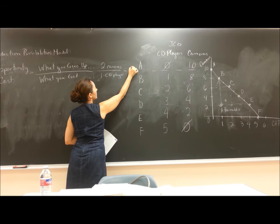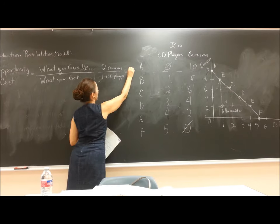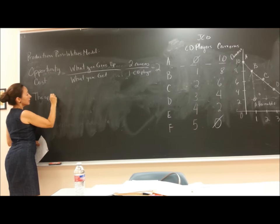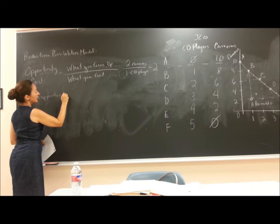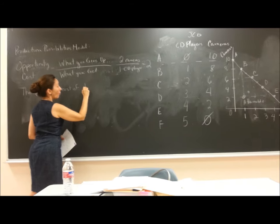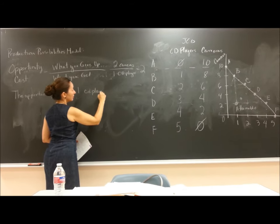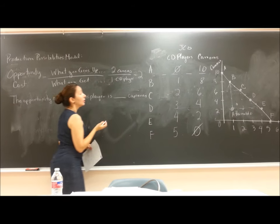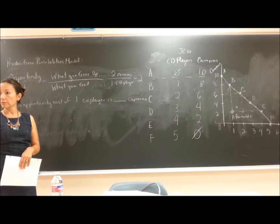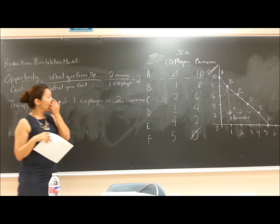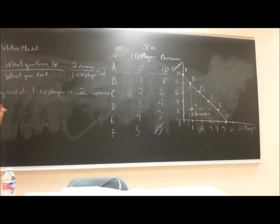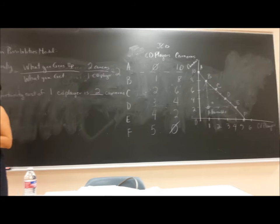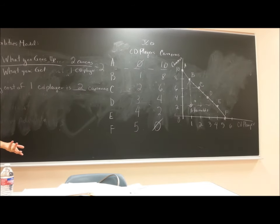Two divided by one equals two. So the way we express this is: the opportunity cost of one CD player is two cameras. How many cameras do we give up to produce one CD player? Two cameras. The same applies moving from point B to C — we're giving up two cameras to get one more CD player.